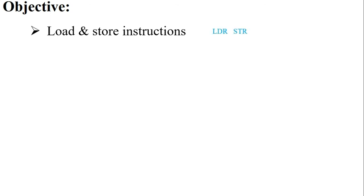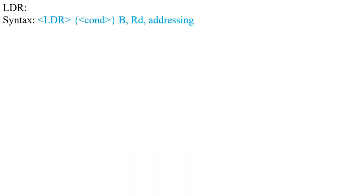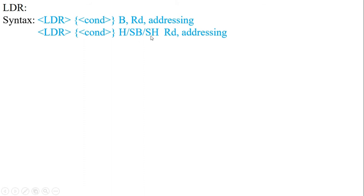In this video I am going to explain load and store instructions — that is the main objective. We have two instructions: LDR (load) and STR (store). The syntax of LDR is: LDR{condition}{B} Rd, addressing — where B stands for byte and addressing stands for a memory location. Another syntax may be LDR{condition}{H|SB|SH} Rd, addressing — where H is half word, SB is signed byte, and SH is signed half word.